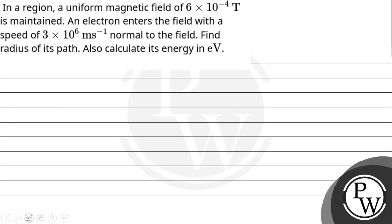Hello, let's read this given question. In a region, a uniform magnetic field of 6×10⁻⁴ tesla is maintained. An electron enters the field with a speed of 3×10⁶ meter per second, normal to the field. Find the radius of its path, and also calculate its energy in eV.